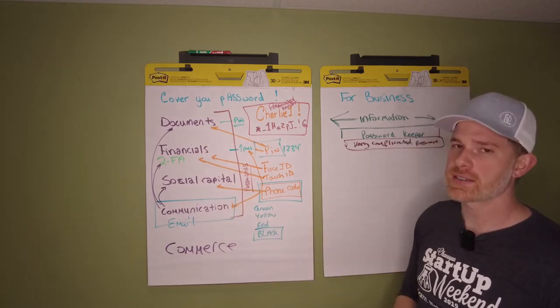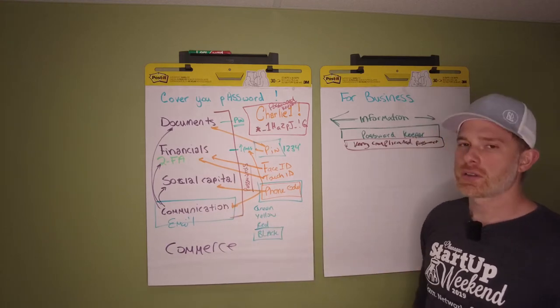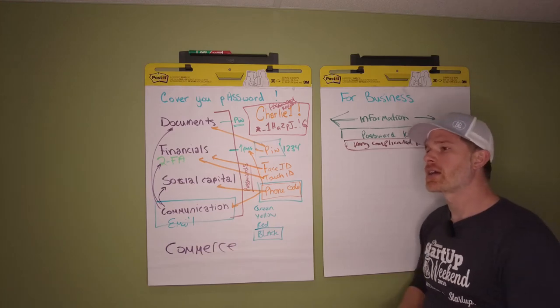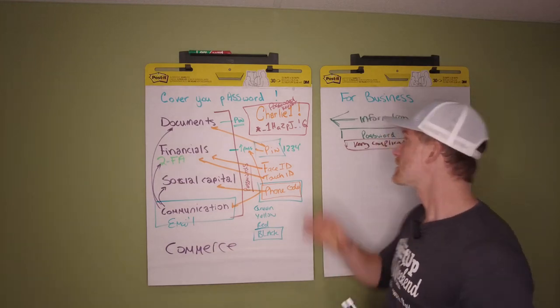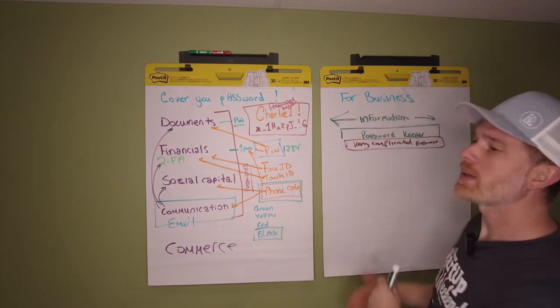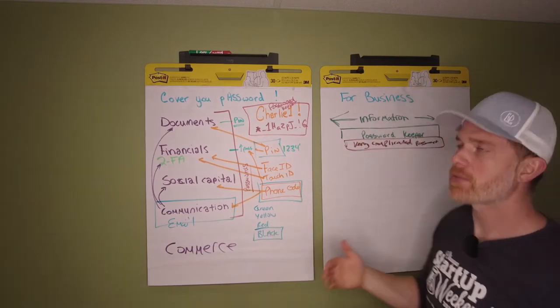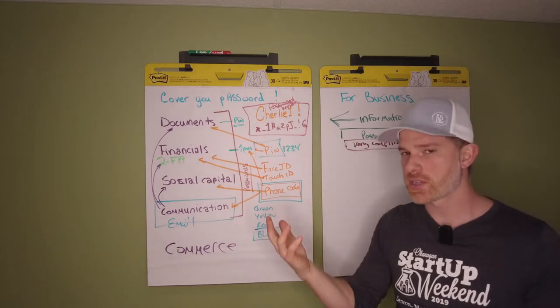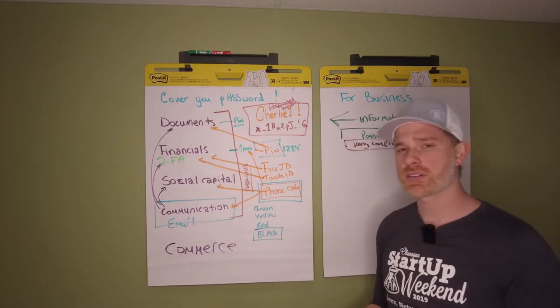You're going to need to decide: documents, financials, social capital, communication, commerce—who gets access to what? I'm here to talk to you about your infrastructure. In our organization, we've gone through the effort going, 'Okay, we're going to set up our information through this lens,' and we can segment what information you get access to through the Drive ecosystem.